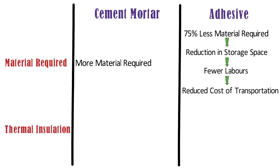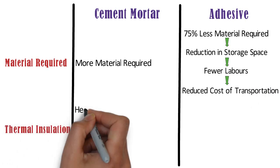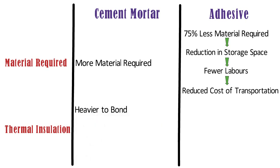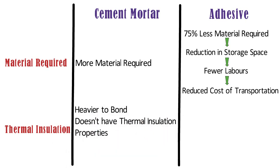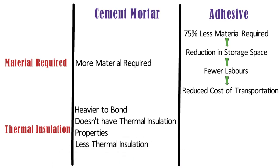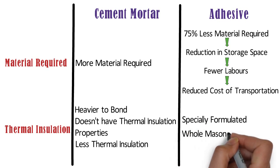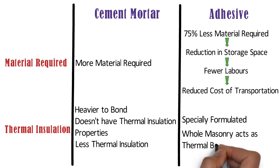Thermal insulation. The cement mortar is heavier to bond with AAC blocks and also does not have thermal insulation properties, which leads to less thermal insulation when the whole masonry is considered. Whereas, AAC block adhesive is specially formulated to match the thermal insulation property of AAC blocks. Hence, the whole masonry acts as a thermal barrier, which is not the case with cement mortar.